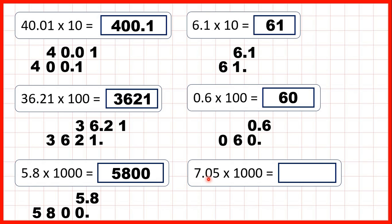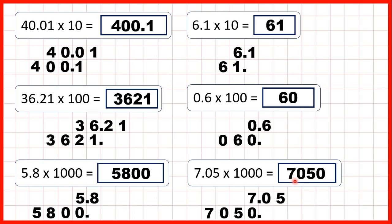Finally we have 7.05 times 1000, so we write the number out, copy down the decimal point, and move the digits three squares to the left. There is an empty square before the decimal point, so we write a zero there, giving us 7,050. That makes sense: 7 times 1000 is 7,000 and 7.05 is just a little more than 7, so our answer is a little more than 7,000. Use estimation to check that your answer makes sense.